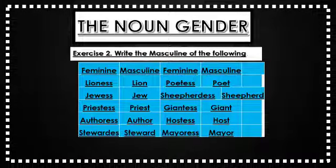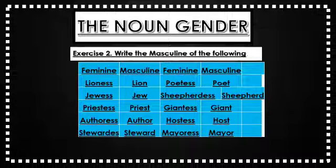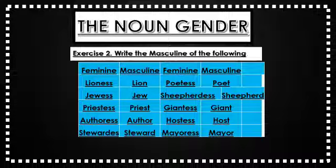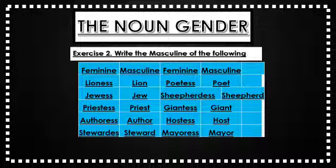Exercise number two: the question is write the masculine of the following. Lioness — lion, Jewess — Jew, priestess — priest, authoress — author, stewardess — steward, poetess — poet, shepherdess — shepherd, jointress — joint, hostess — host, Mauress — Maur.